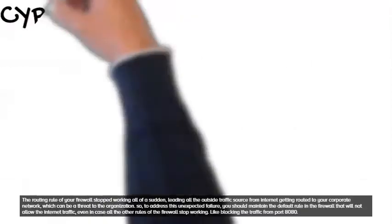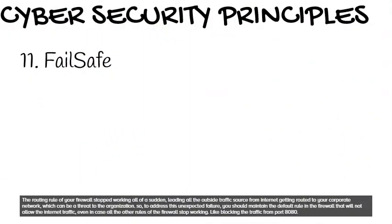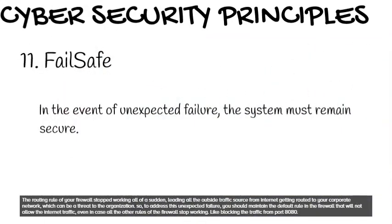11. Fail safe. In the event of an unexpected failure, the system must remain secure. For example, if the routing rules of your firewall stop working suddenly, all outside internet traffic could be routed to your corporate network. To address this, you should maintain a default rule in the firewall that will not allow internet traffic even if all other firewall rules stop working, such as those blocking traffic from port 8080.